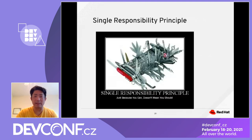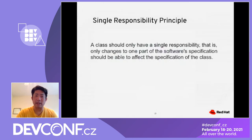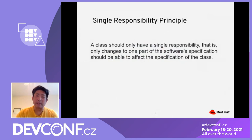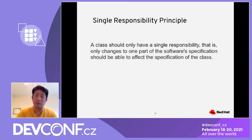Single Responsibility is simple — you don't want to do too many things at the same time. Every class should have only one responsibility; it should do one single thing. If a class is doing too much, then you need to refactor that class into smaller classes.